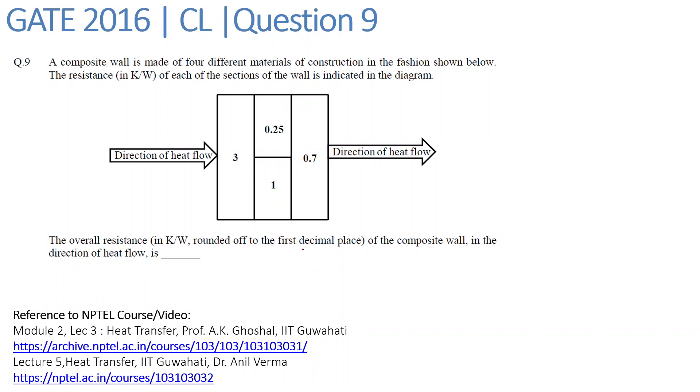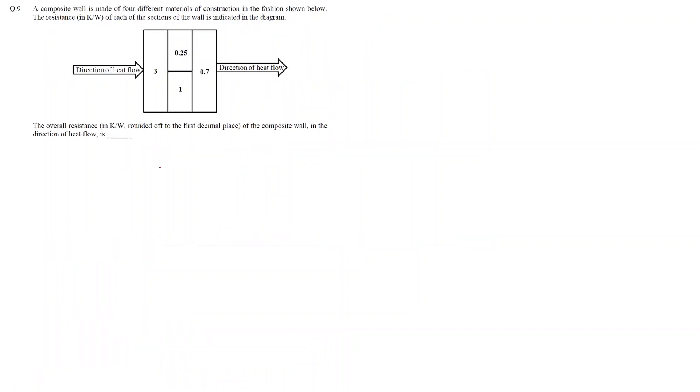In general, the heat flux, that is q/A, we write it as k·ΔT/Δx. We can approximate this as ΔT/(Δx/kA), where this entire term Δx/kA we write as resistance.